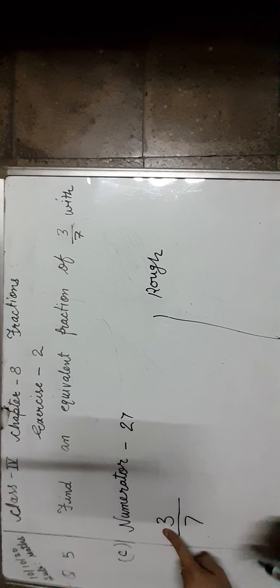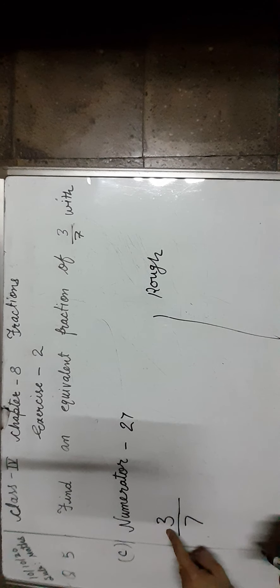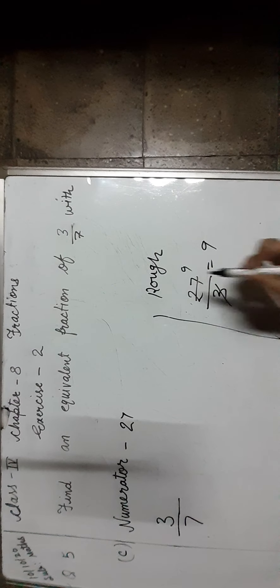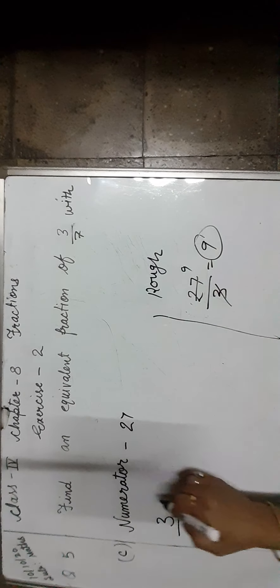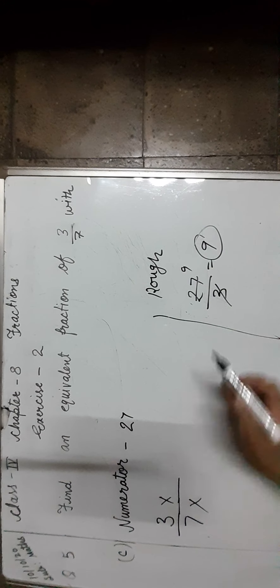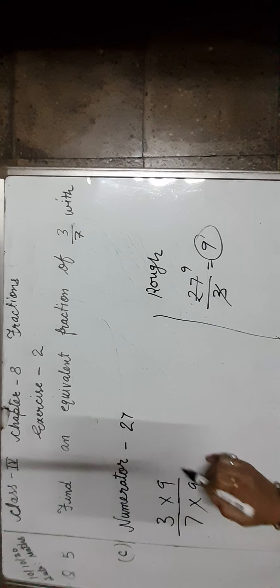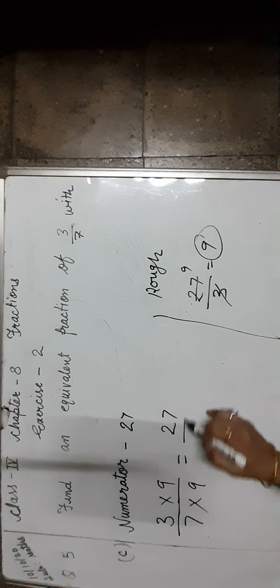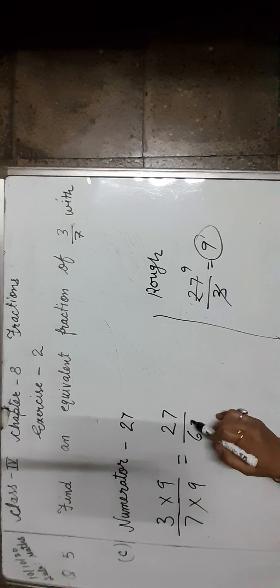Now, find an equivalent fraction of 3 upon 7 with numerator 27. The numerator is 3. How much do we multiply 3 to get 27? 27 divided by 3 gives 9. So we have to multiply both numerator and denominator by 9, and we will get 27 upon 63.